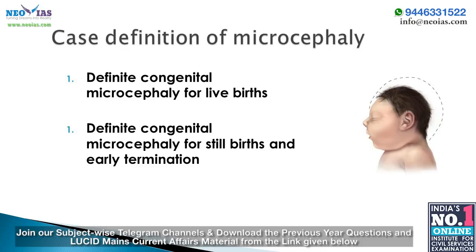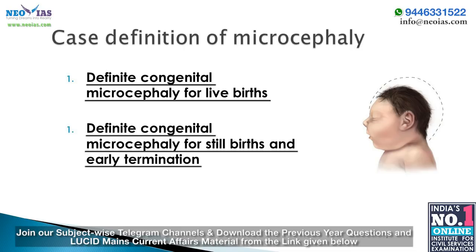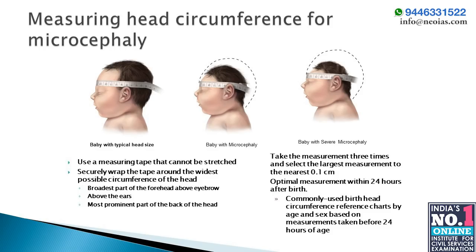The case definition of microcephaly covers two cases: definite congenital microcephaly for live birth, and definite congenital microcephaly for stillbirth and early termination. For live births, head circumference at birth is less than the third percentile for gestational age and sex. If head circumference at birth is not available, head circumference less than the third percentile for age and sex within the first six weeks of life is used. A diagram illustrates a baby with typical head size, a baby with microcephaly, and a baby with severe microcephaly, showing how head circumference is measured.